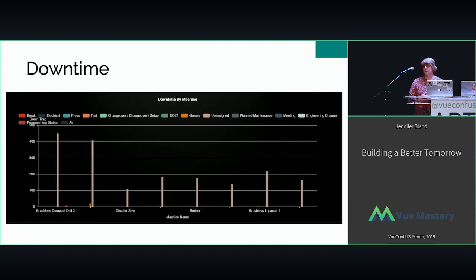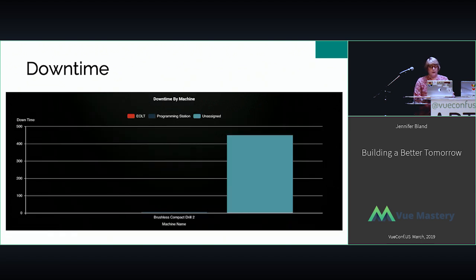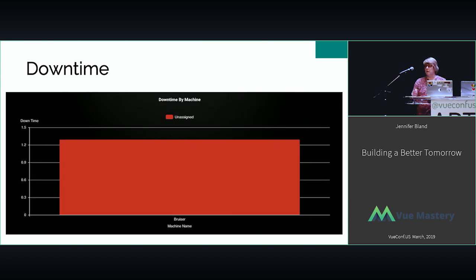For example, the default report on downtimes by machine shows all the downtimes for all the machines. Then a specialist can drill down to see details for one specific machine — in this case the brushless compact drill — and then further drill down to the specific SKU, which are the actual products being created on that line at that time, and see that detail.